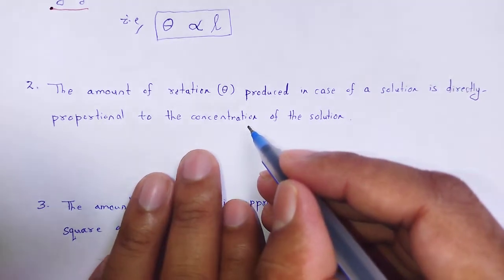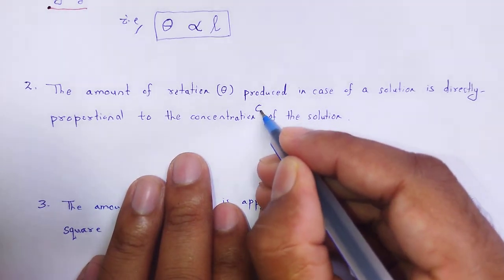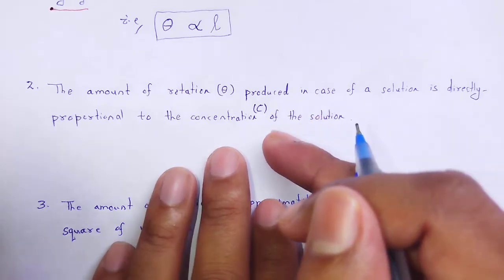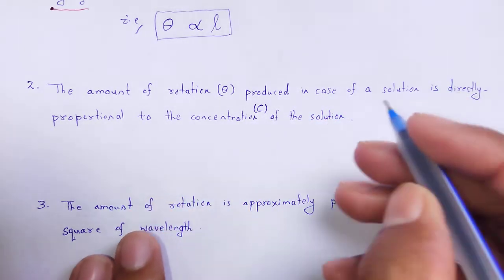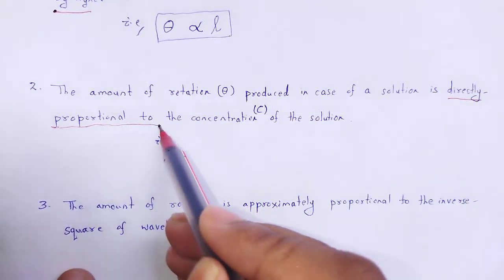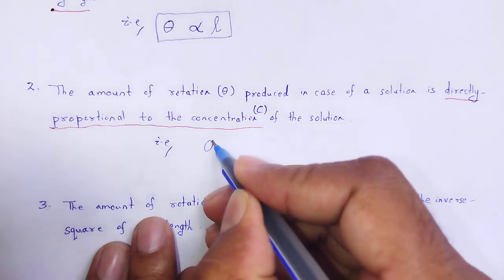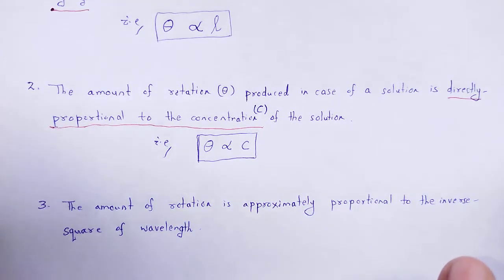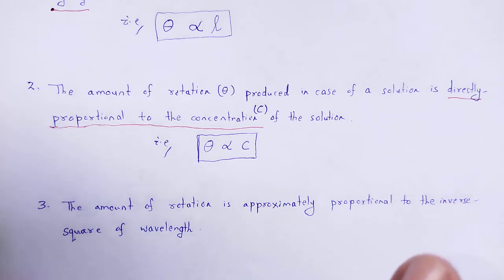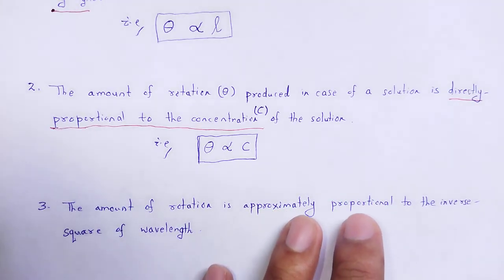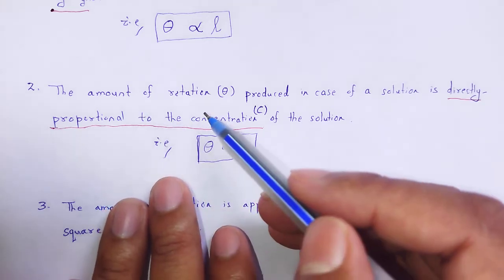For a solution, which is solvent plus solute, if the solute is more in comparison to another solution then it is said to be a concentrated one. That concentration factor directly depends upon the amount of rotation. Next, the amount of rotation is approximately proportional to the inverse square of the wavelength. For red light, the wavelength is more, and that is why the angle of rotation will be small. So the angle of rotation depends upon the wavelength of the incident light.